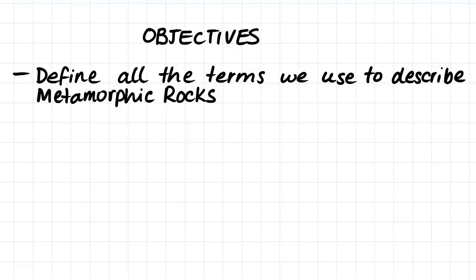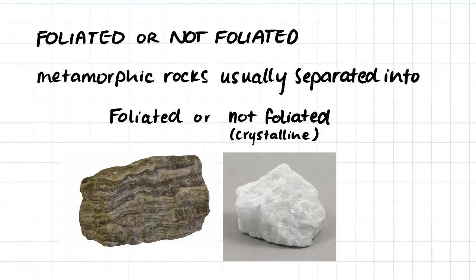Hi guys, the objective of this video is to define all the terms we use to describe metamorphic rocks. Metamorphic rocks are either foliated or not foliated. Foliation refers to the stripes that can occur through metamorphic rocks. We often separate our metamorphic rocks up into two separate categories, according to whether they are foliated or not foliated.